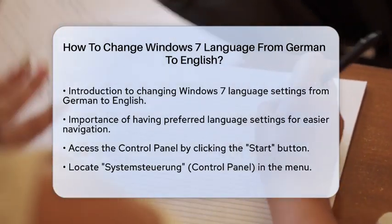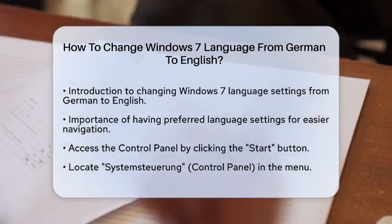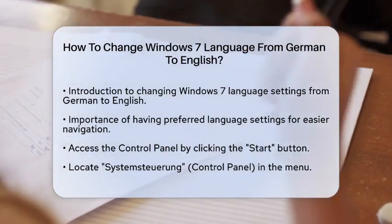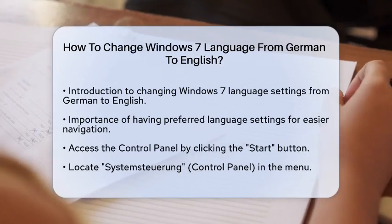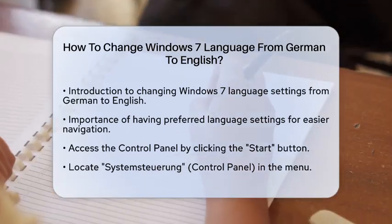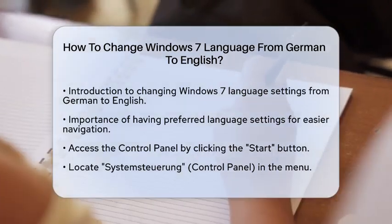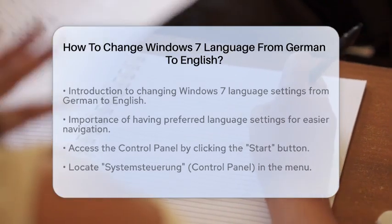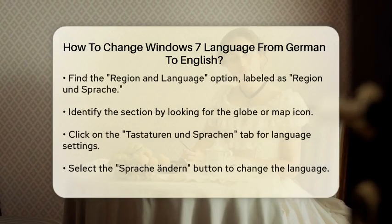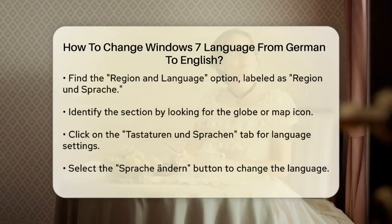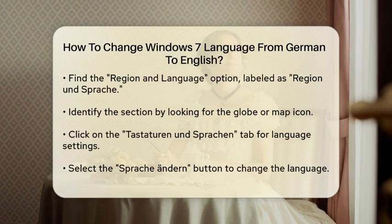First, you will need to access the control panel. To do this, click on the Start button located at the bottom left corner of your screen. From the menu that appears, look for Systemsteuerung, which is the German term for control panel. Click on it to open.